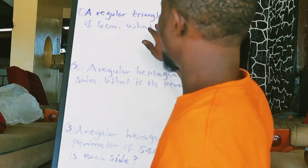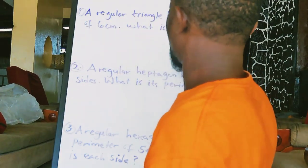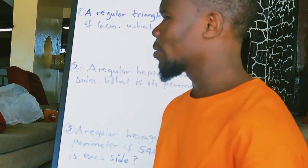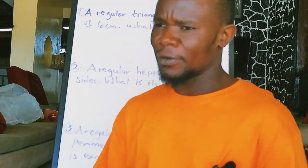A regular triangle has a length of 6 cm. What is its perimeter? When you say regular or a regular polygon, you're trying to say all the lengths are equal.